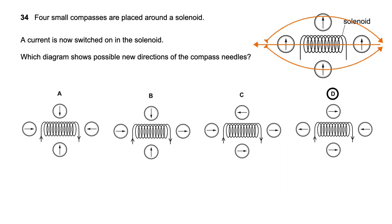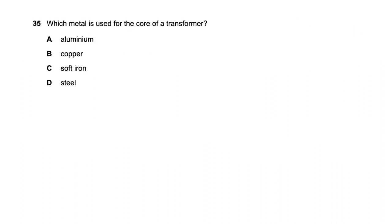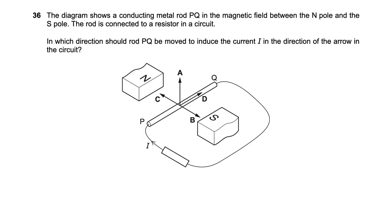Question thirty-five asks which metal is used for the core of a transformer. The answer is soft iron. Soft iron has very high magnetic permeability, which means the magnetic flux linkage between the primary and secondary coils is very efficient, making it ideal for transformer cores.